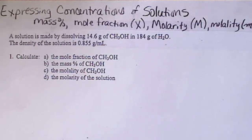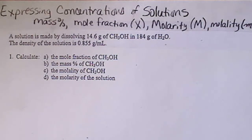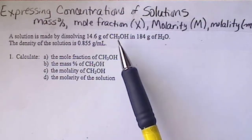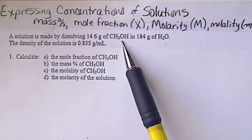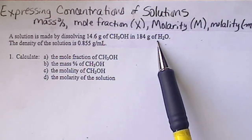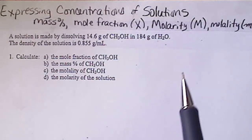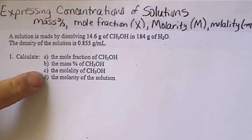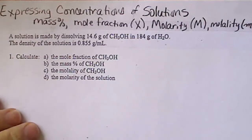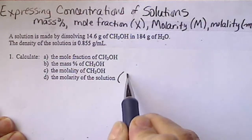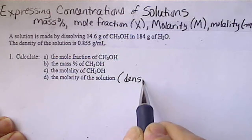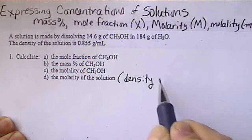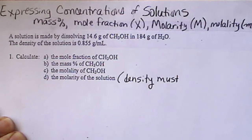In this video, we will be seeing examples of converting from one concentration unit to another. If we're given the mass of a solute — 14 grams of methanol — and the mass of the solvent, in this case water, we can calculate the mole fraction, the mass percent, and the molality. In order to calculate the molarity, the density of the solution has to be given, and we'll see why.